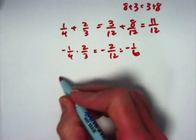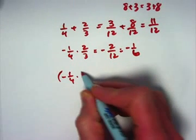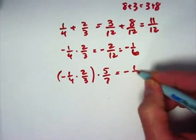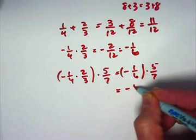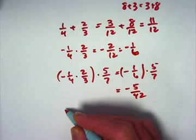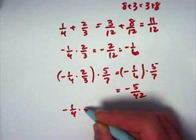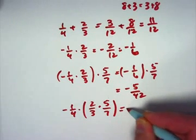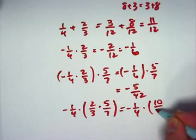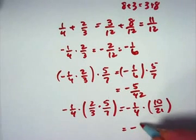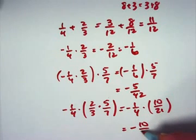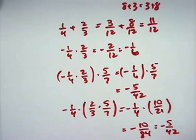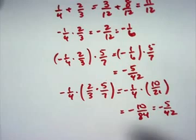Rational number operations are also associative. For example: negative one-fourth times two-thirds in parentheses, then times five-sevenths, gives negative one-sixth times five-sevenths, which is negative five forty-seconds. If instead I do two-thirds times five-sevenths first — putting parentheses around those two — I get the same final answer: negative ten eighty-fourths, which reduces to negative five forty-seconds. Same answer either way.